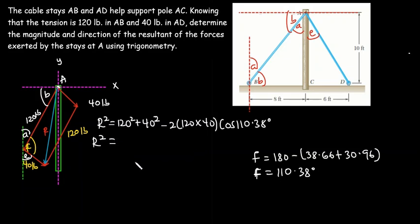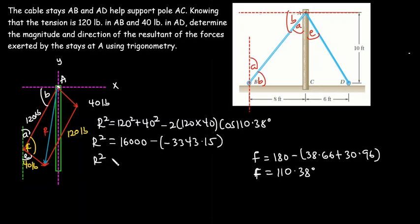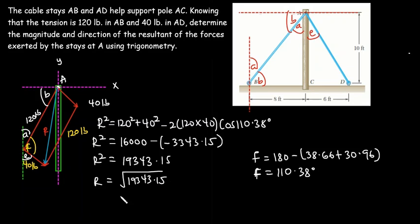Adding 120² and 40² gives 16,000. Then 2 × 120 × 40 × cos(110.38°) gives −3,343.15. Because of the two negative signs, we add: 16,000 + 3,343.15 = 19,343.15. So R equals the square root of 19,343.15.